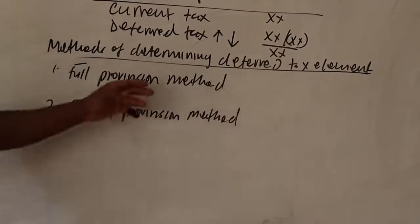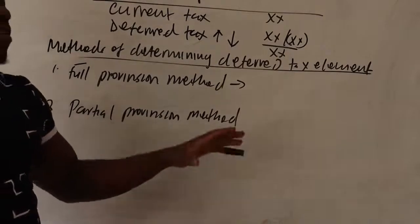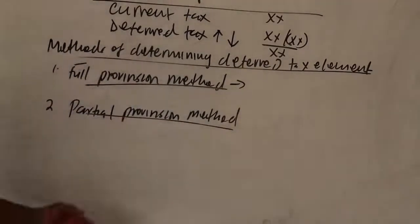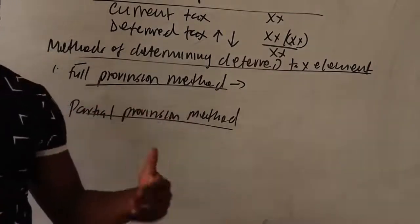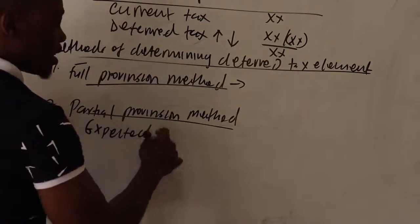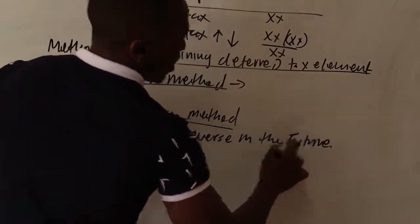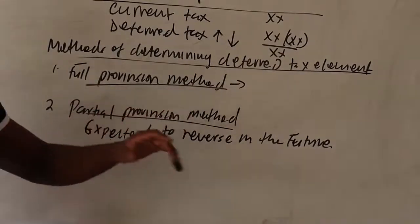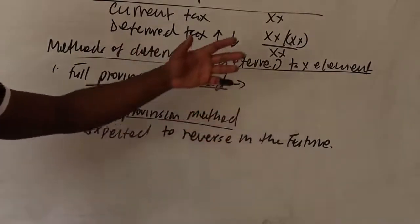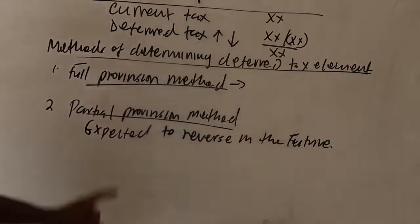Under the full provision method, you recognize all temporary differences arising from all transactions. The partial provision method, as the name suggests, only recognizes temporary differences for transactions which are reasonable and expected to reverse in the future. Full provision does not filter which are deductible or taxable — it recognizes all. Partial provision only recognizes those which make sense and are expected to reverse.